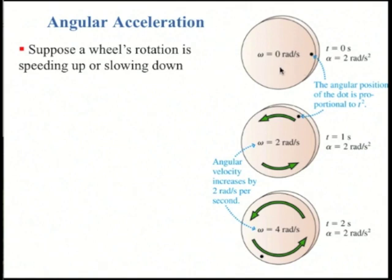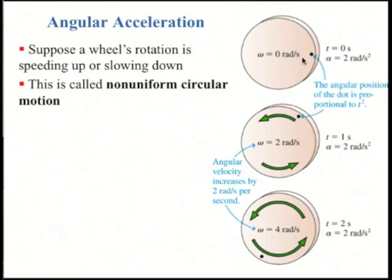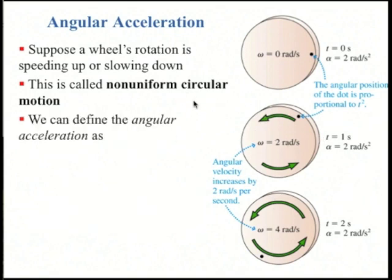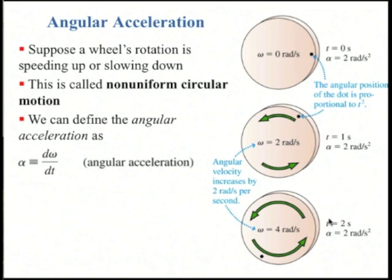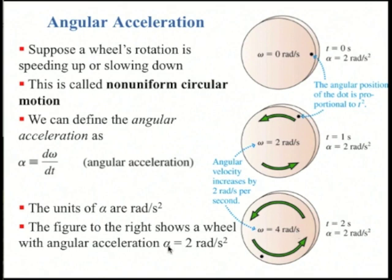Now suppose omega is not constant. Here's a situation where omega starts at 0 — the wheel's at rest — then someone spins the wheel counterclockwise. This is called non-uniform circular motion, and we define angular acceleration as d omega by dt. If one second later omega is 2 radians per second, and two seconds later it's 4 radians per second, then angular acceleration is 2 radians per second per second, or 2 radians per second squared. The SI unit of alpha, angular acceleration, is radians per second squared.